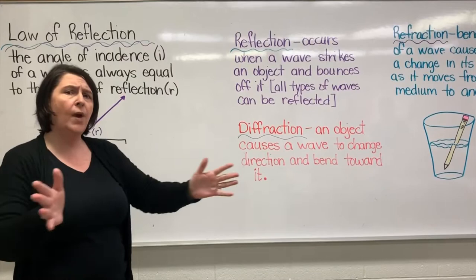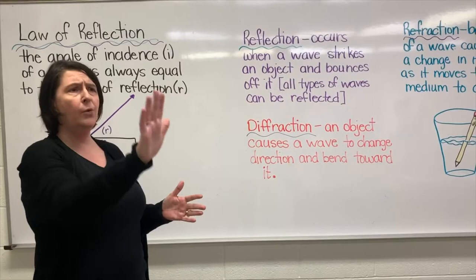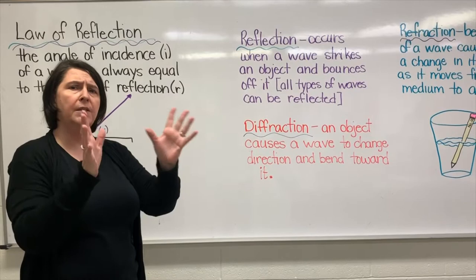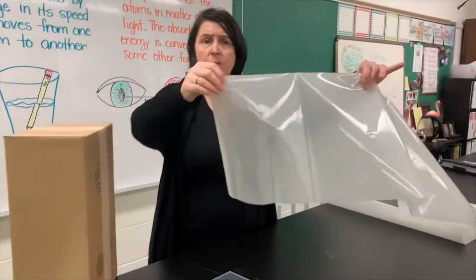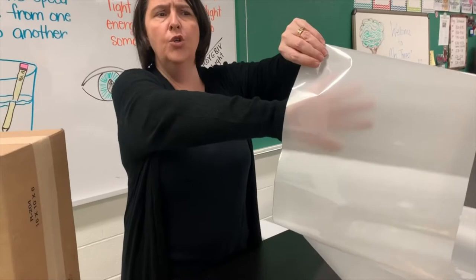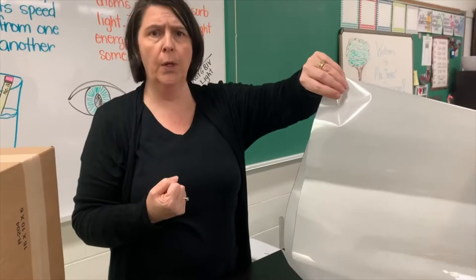Think about walking into the bathroom and seeing the shower door. The pattern on the shower door causes the light to bend in different directions so you can't see a clear image through it. This is like looking through wax paper — this would be translucent. You can see my hand behind it but you cannot see a good clear image. Looking through sheer curtains on a window or wax paper are great examples of this.